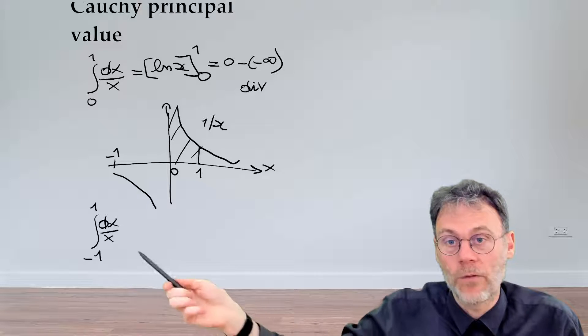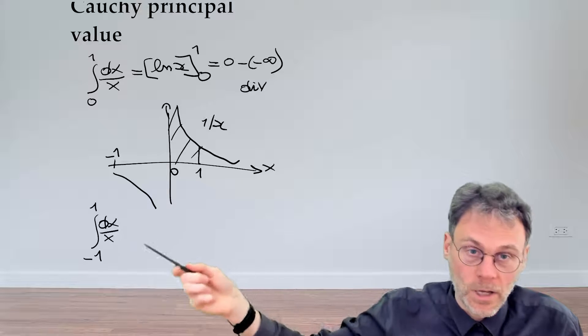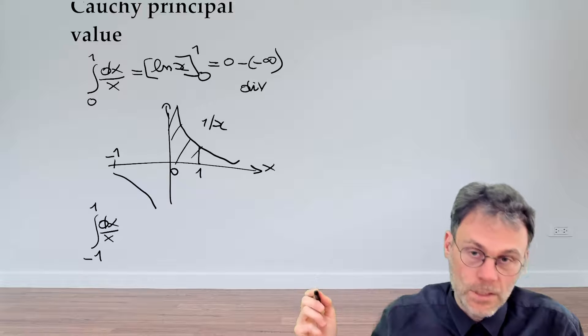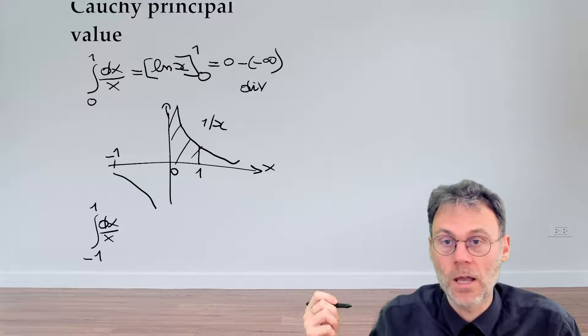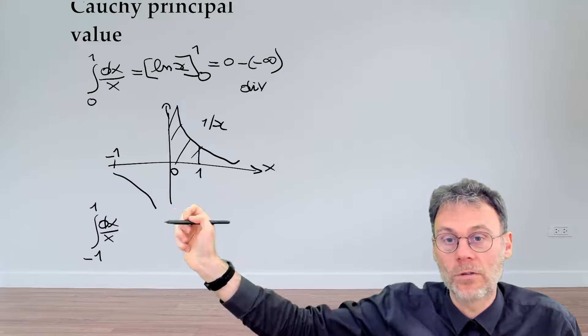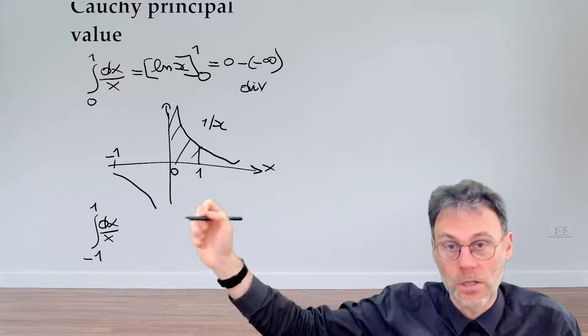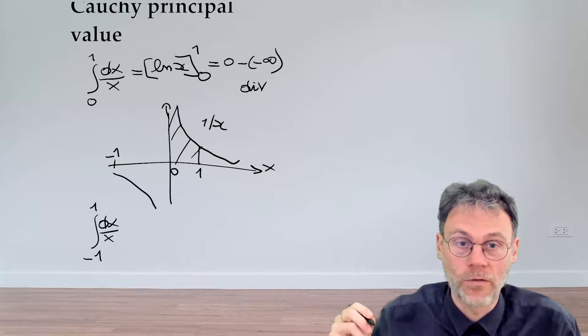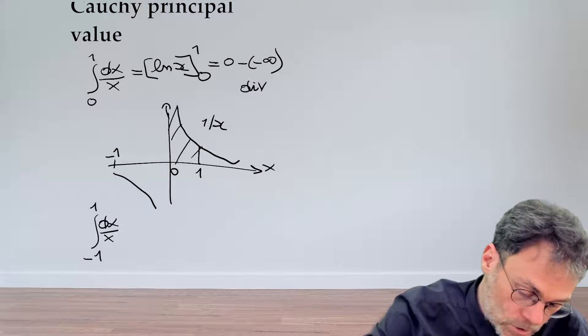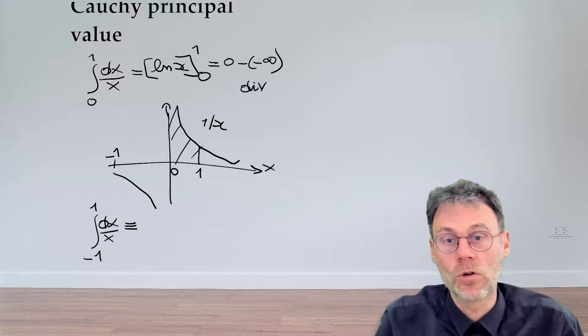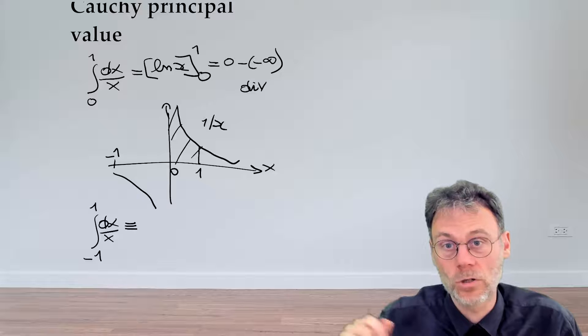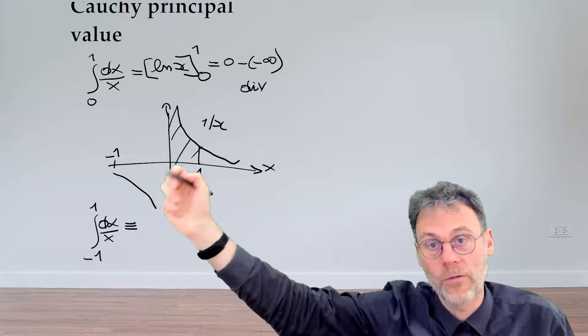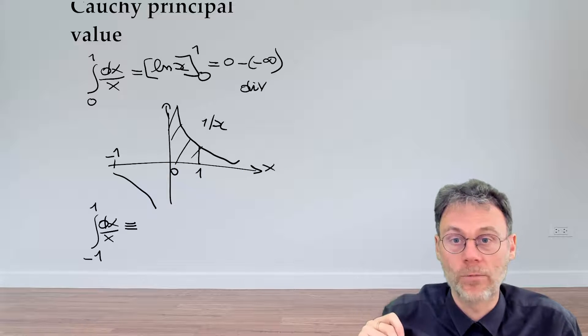Well, if we write down an expression like this, what this will mean conventionally, by definition, is that we should interpret this definition as something which diverges, which is not defined. Why? Because we should interpret this as two completely separate limiting operations, one for the negative part here and one for the positive part.